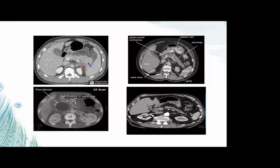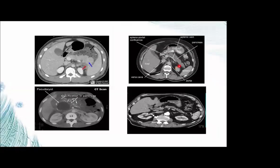CT shows the pancreas, splenic vein, splenic vein confluence, and IVC. In old age, the pancreas shows atrophy, typically in patients aged 40 to 50. CT findings in pancreatic enlargement include pancreatic fluid collection, calcification, and pseudocyst formation.